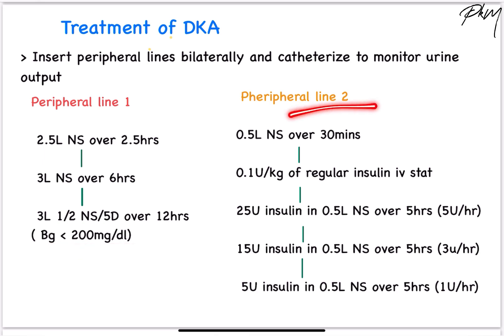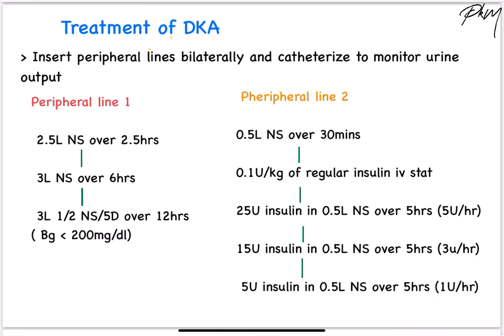Simultaneously, on peripheral line 2, following 0.5 litres of NS over 30 minutes, give 0.1 units per kg of regular insulin IV stat — close to 60 to 70 units of insulin given as IV stat. After this, give insulin infusion: first 5 units of insulin per hour, then change to 3 units, then 1 unit per hour. For 5 units of insulin, infuse 25 units of insulin in 500 mL of NS given over 5 hours.